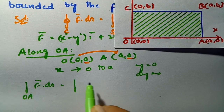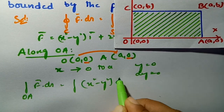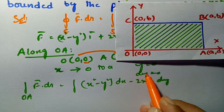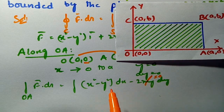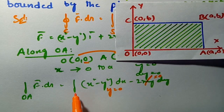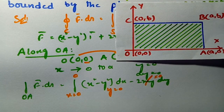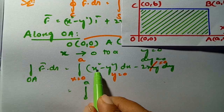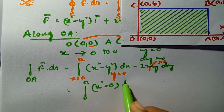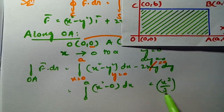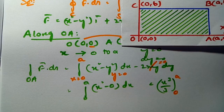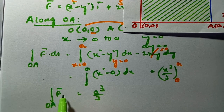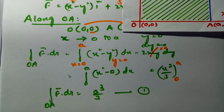Computing the line integral along OA: F̄·dR̄ = (x² - y²)dx + 2xy dy. Substituting dy = 0 and y = 0, this becomes the integral from 0 to a of x² dx = [x³/3] from 0 to a = a³/3. Therefore the line integral along OA equals a³/3.